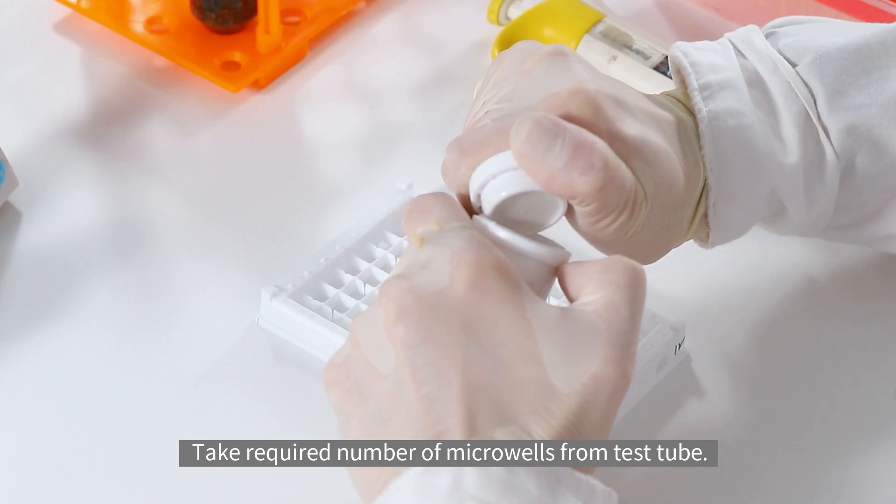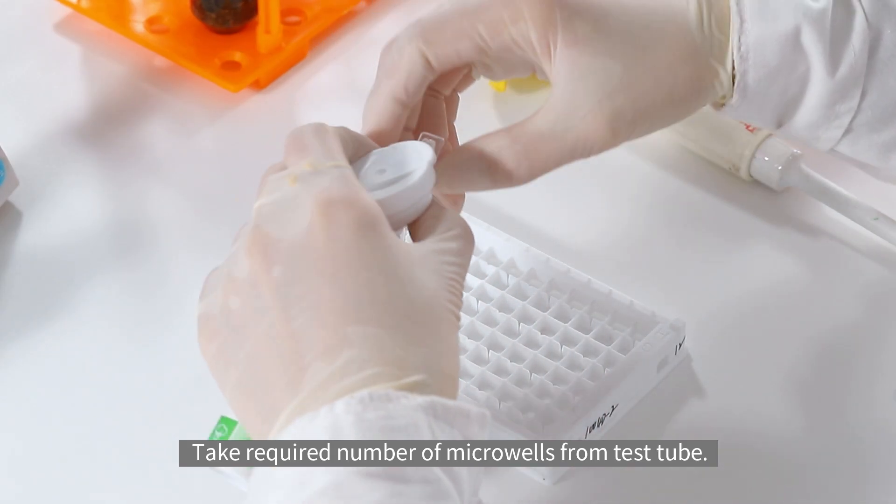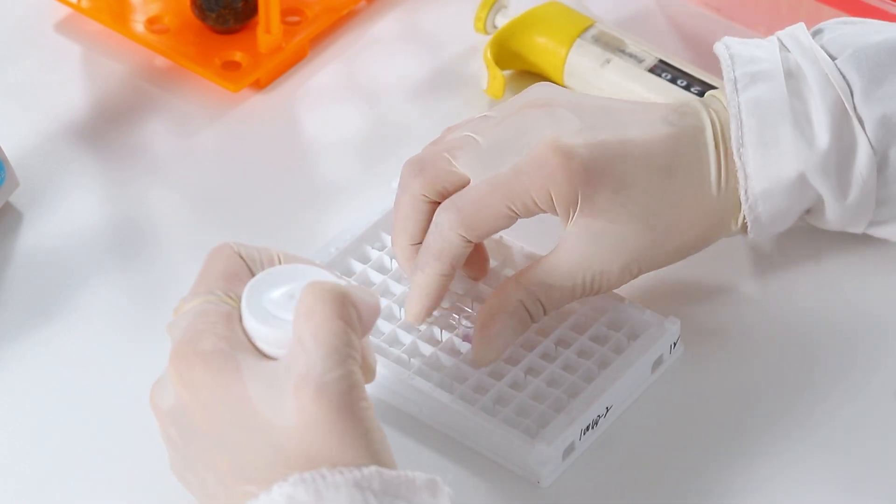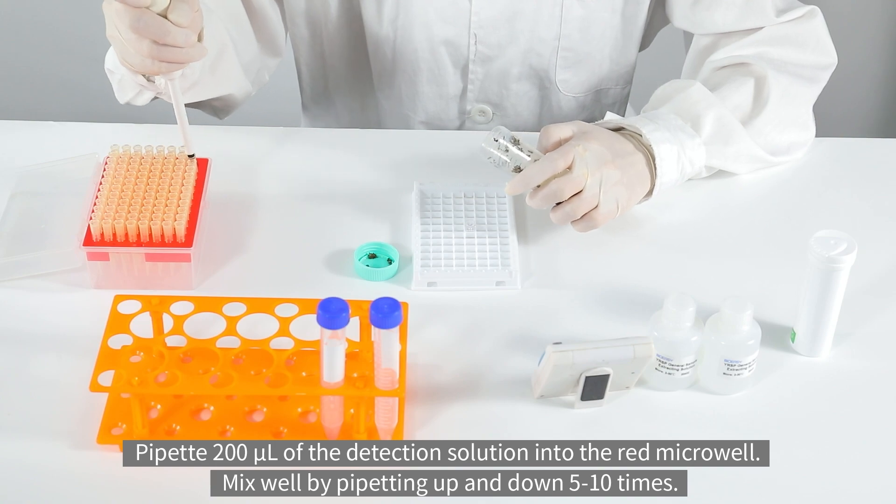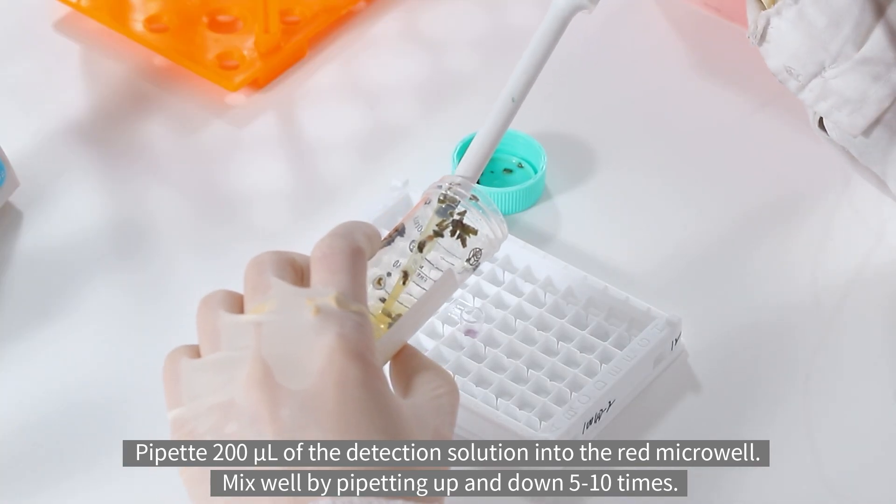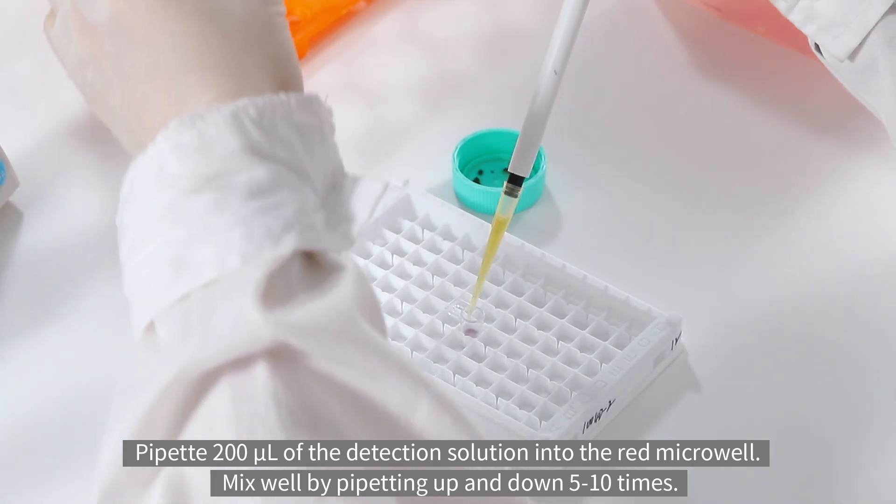Test Procedure. Take required number of microwells from test tube. Pipette 200 microliters of the detection solution into the red microwell, mix well by pipetting up and down 5 to 10 times.